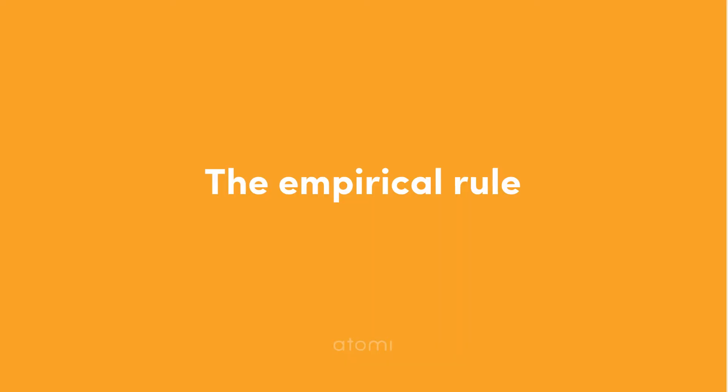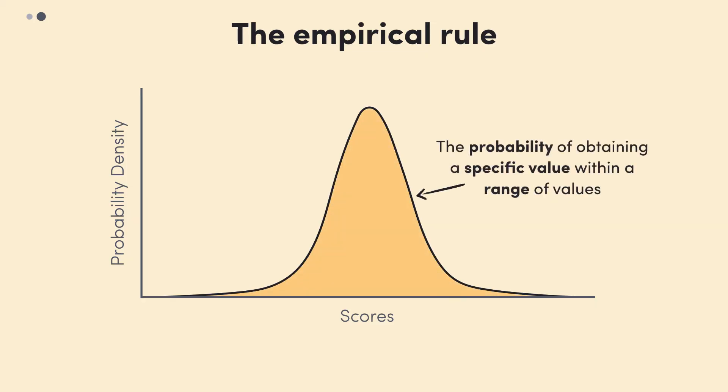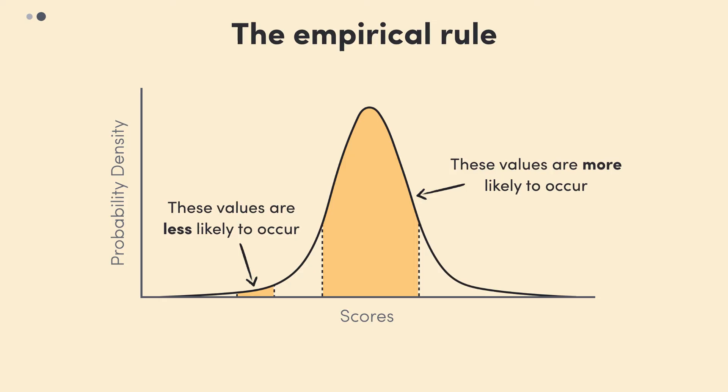Alright, let's move on to see what the empirical rule is. If we have a normal distribution like so, we know that the area under the curve is the probability of randomly obtaining a specific value within a range of values. Now, since the curve rises highest closer to the mean, values closer to the mean are more likely to occur than those around the tails.